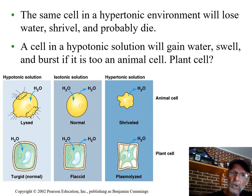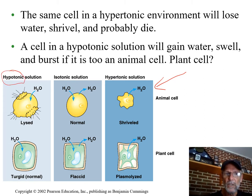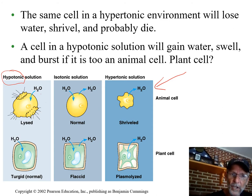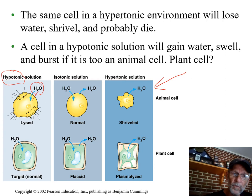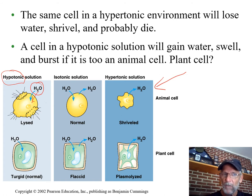Let's focus just on animal cells right now. This cell is surrounded by a hypotonic solution. Hypotonic means less solute outside, which means more water outside. So water would move in. This flimsy little plasma membrane that an animal cell is surrounded by is flimsy, and if enough water comes in — just like if you fill up a water balloon with enough water — it will burst.